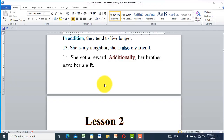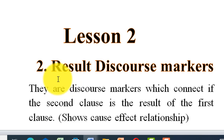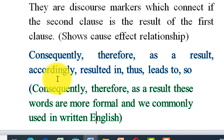This is the second part of discourse marker lesson 2, which is called result discourse markers. When you say result discourse markers, there is a cause-effect relationship. If there is a cause, there must be a result. We have two different ideas: a cause and an effect, where the second is the result of the first. To combine these cause-effect sentences, we better use result discourse markers.